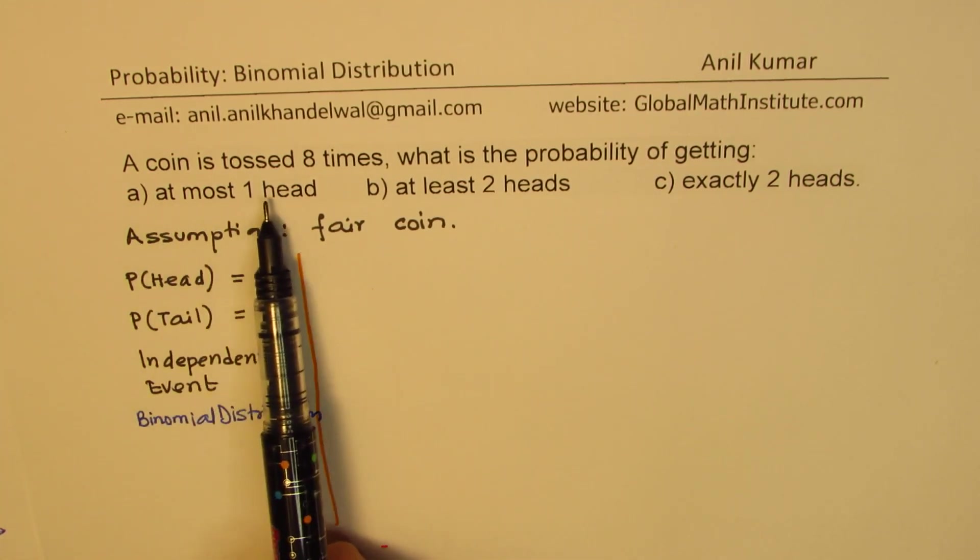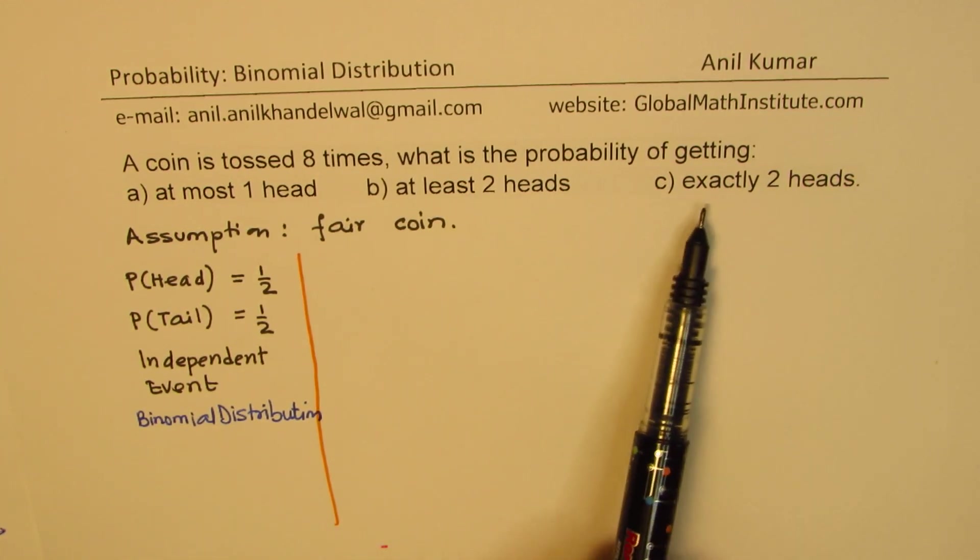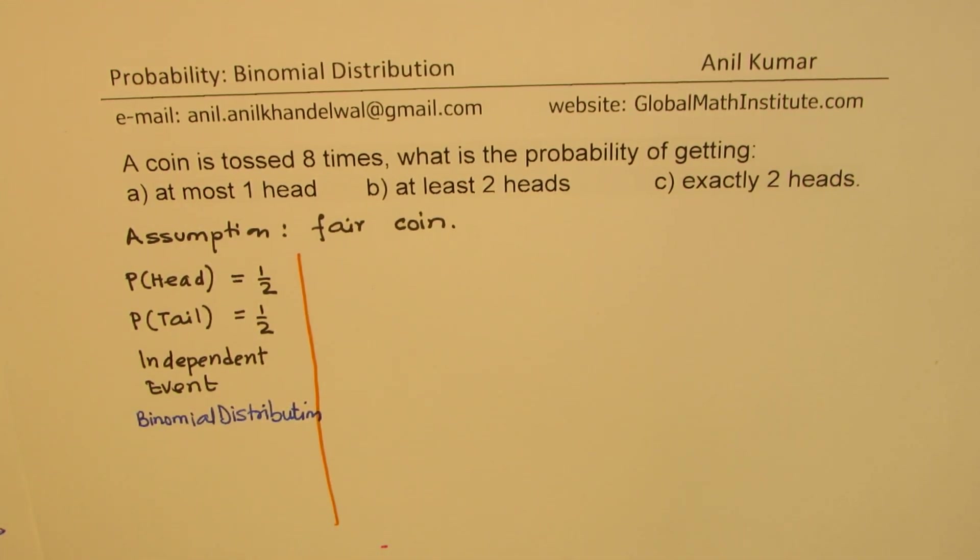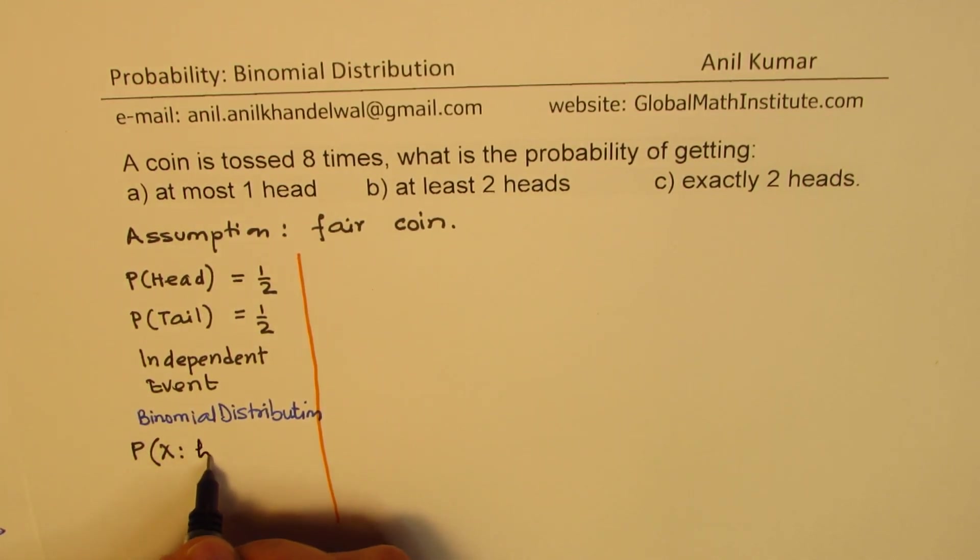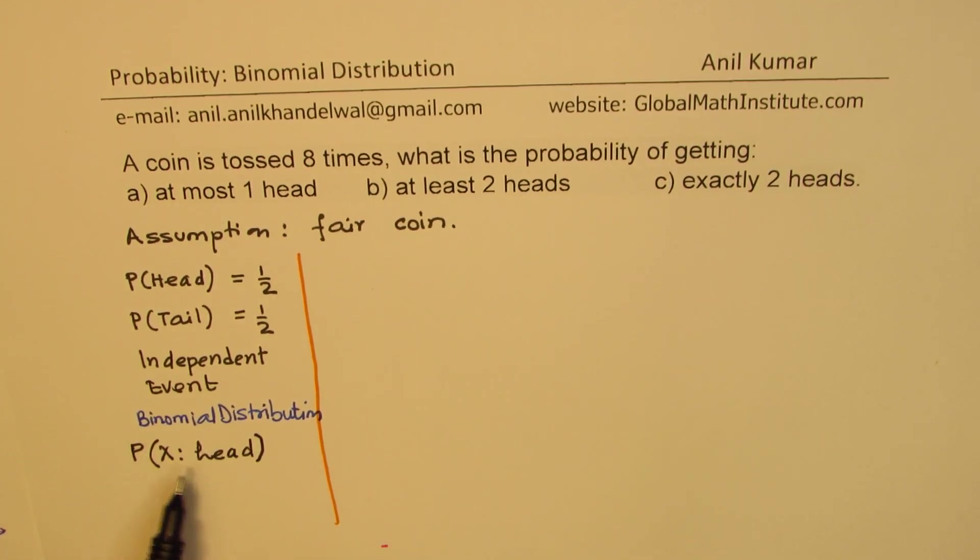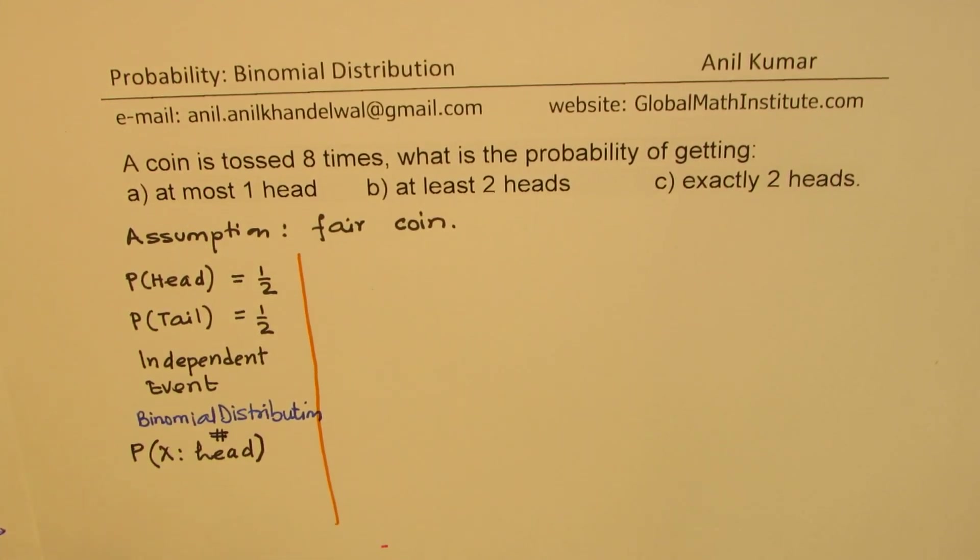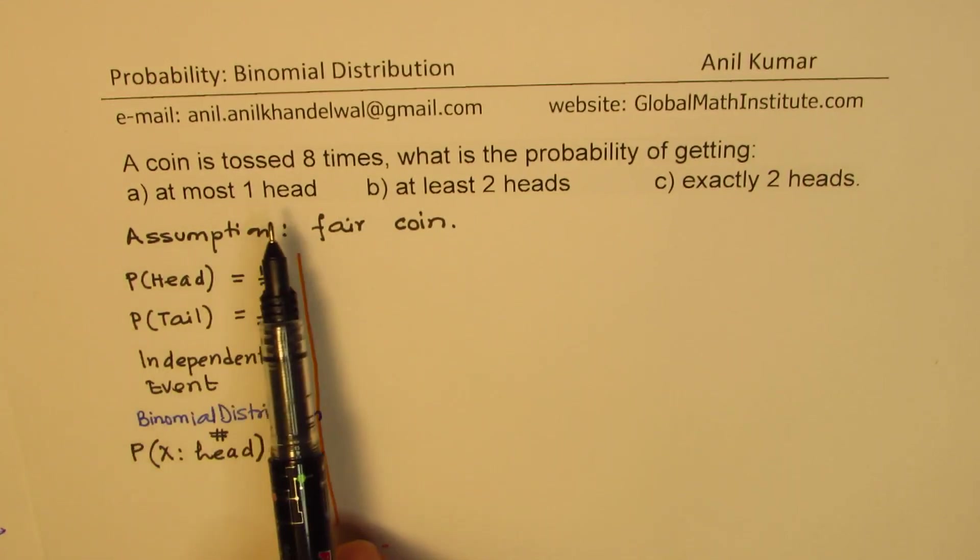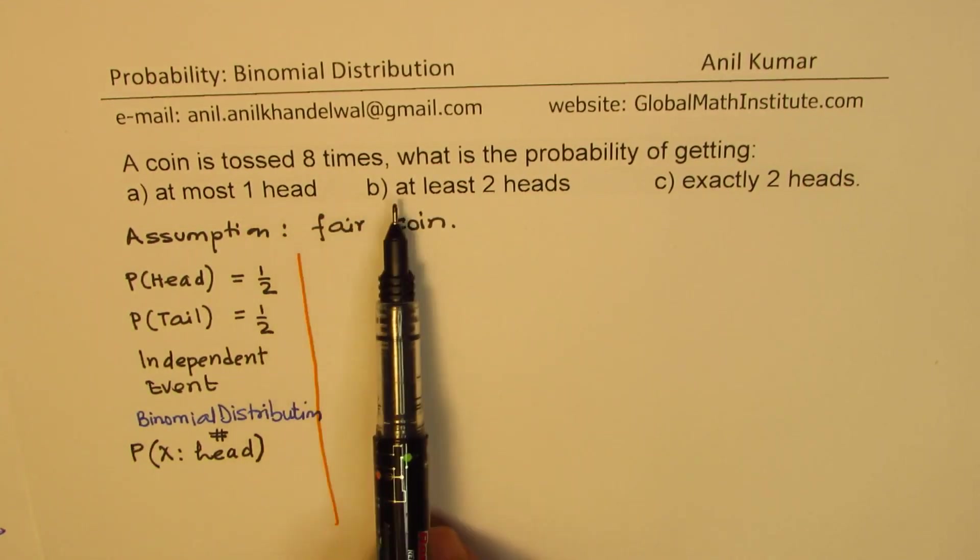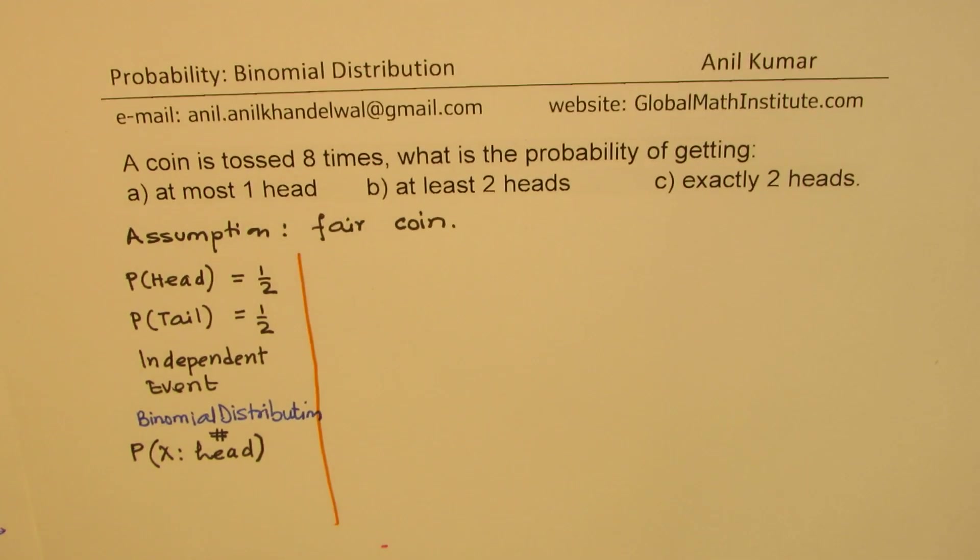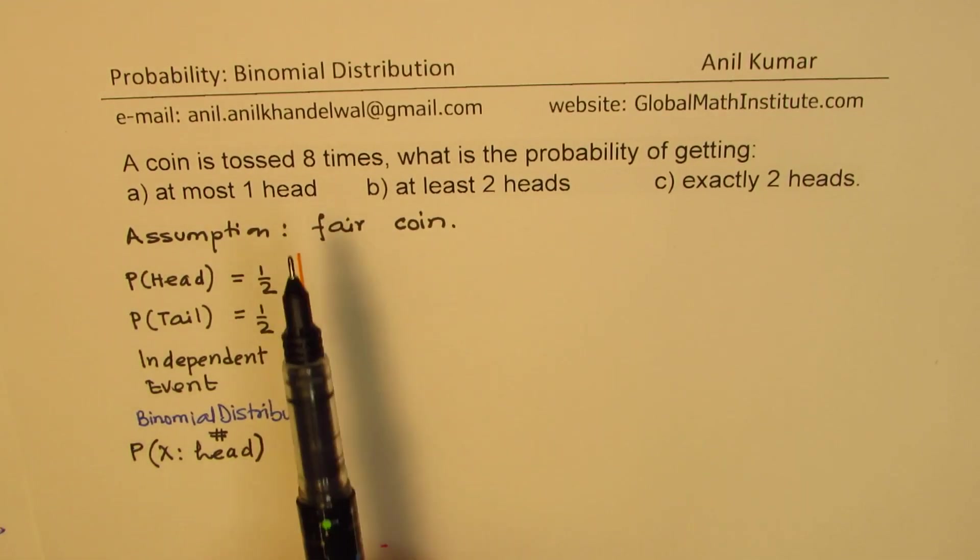Now, we're talking about at most one head, at least two heads, exactly two heads. So we'll define our event as the event will be where the chances of getting heads. So to get head. The failure will be tails, but the success of an event is number of heads. If we have eight times toss, then the number of heads could be zero, one, two, eight. So there are nine possibilities.